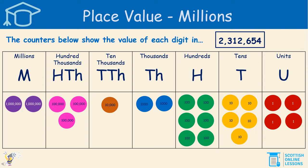So let's look to the units first. As you can see, there are four little one place value counters, so that is four units. In the tens column, there are 1, 2, 3, 4, 5 — so 5 each with the value 10, meaning the value of the tens in that number is 50. In the hundreds column, there are 1, 2, 3, 4, 5, 6 counters, so the value is 600.